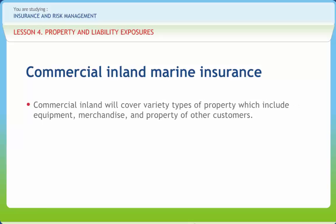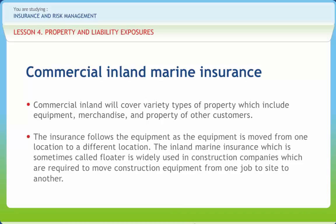Commercial inland marine will cover a variety of types of property which include equipment, merchandise and property of other customers. The coverage covers movable property whether the property is usually moved or not. The insurance follows the equipment as it is moved from one location to a different location. Inland marine insurance, sometimes called a floater, is widely used in construction companies which are required to move construction equipment from one job site to another. Inland marine coverage contains standard forms referred to as filed forms, used to cover properties whose risks do not vary from property to property and can be class-rated together. Filed forms are usually written for open perils and some will even include coverage for earthquake and flood.